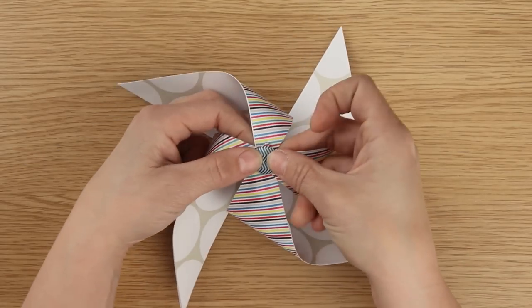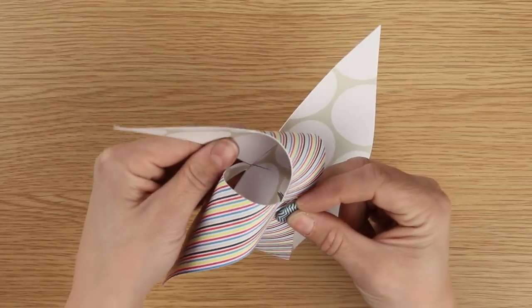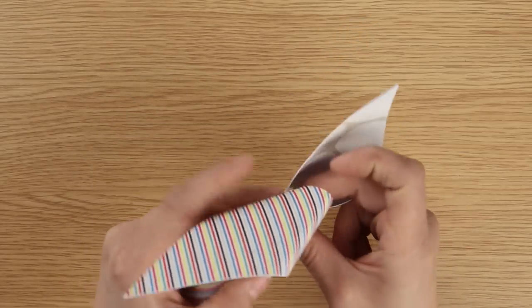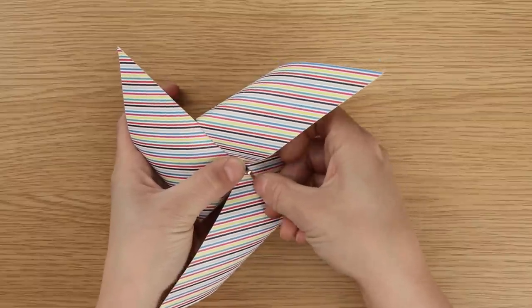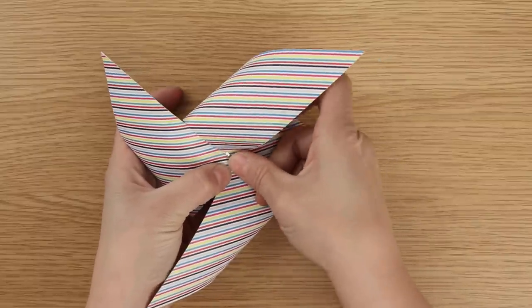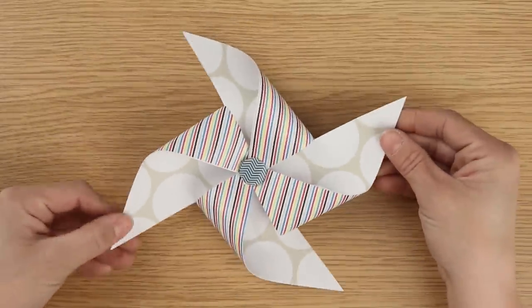Like so. Now you can see the pinwheel starting to take shape. The last thing we need to do is pop it through the hole at the back, turn it over and separate the arms at the back of the brad pressing securely to give us our finished pinwheel.